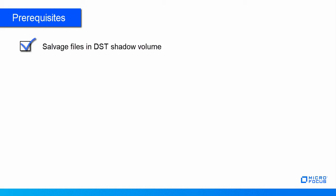Ensure to salvage the required files available in the DST Shadow Volume, otherwise the files cannot be salvaged after the data is migrated to cloud. As a precaution, it's better to take a backup of the DST Shadow Volume before performing the DST Migration.